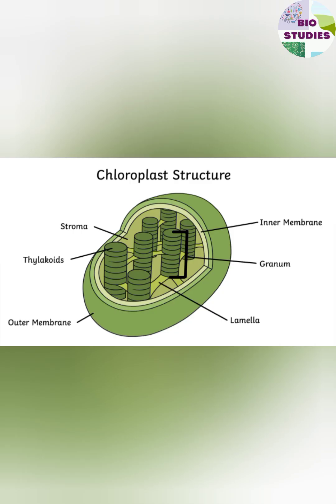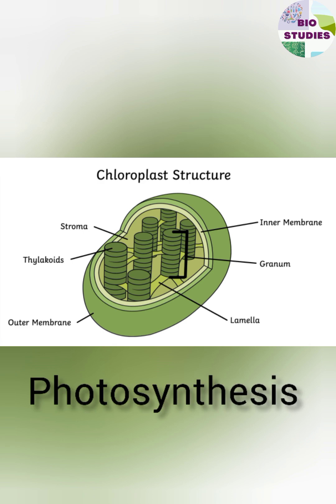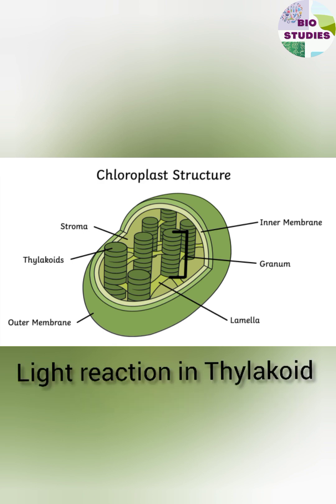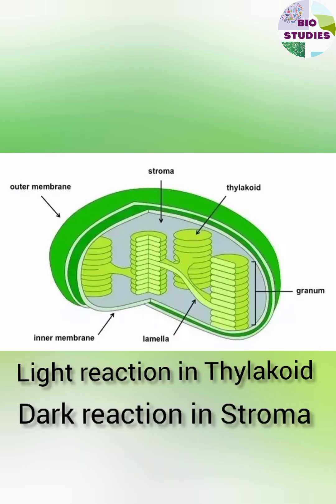The function of chloroplast is in photosynthesis. The light reaction takes place in the thylakoid and the dark reaction takes place in the stroma.